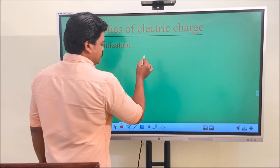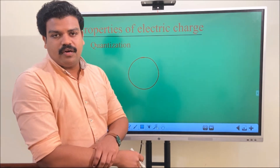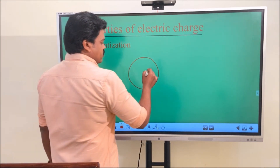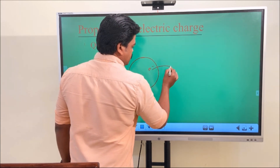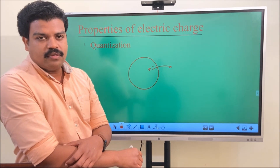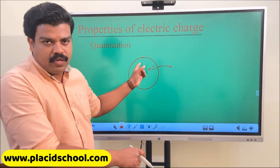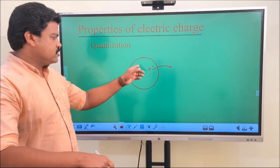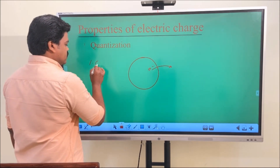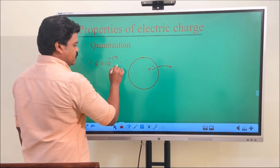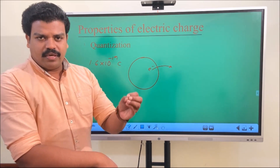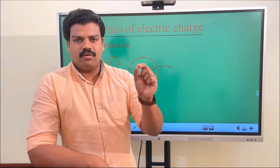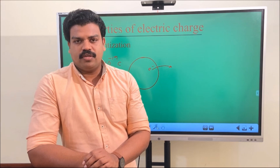What do we mean by quantization? If we have any body and by any method we remove an electron from it, it has a deficiency of one electron. One fundamental charge is removed — a charge of 1.6×10⁻¹⁹ coulombs. A simple example of a charging method is rubbing a scale or comb with dry hair, which transfers electrons from one body to another.